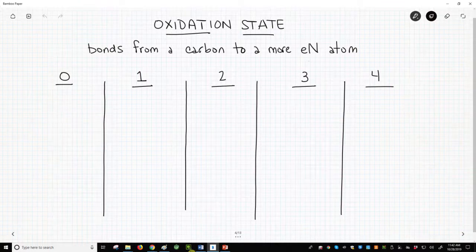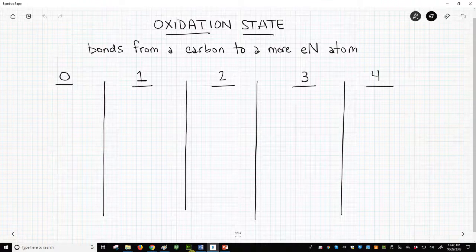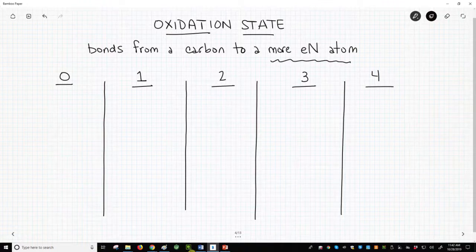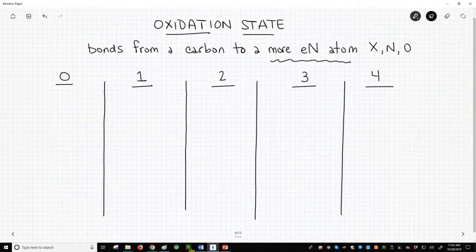A simple, yet imperfect, way to talk about oxidation state is by counting the number of bonds from carbon to a more electronegative atom like a halogen, nitrogen, or oxygen.